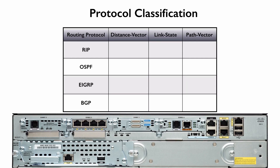The data structure of a distance vector routing protocol has a distance and a vector. To reach a specific network, we know how far it is — some sort of metric, like hop count with RIP — and there's a vector: the direction to reach that destination, such as which interface to leave from or the next-hop IP address. But other than knowing distance and vector information, a distance vector routing protocol does not have an overall view of the network — it doesn't have a map of the terrain.